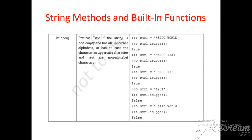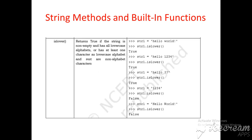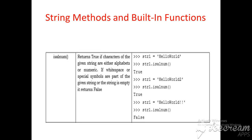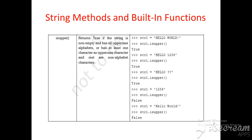str1 equal to '1234' — str1.isupper() returns false because it does not contain any uppercase character. str1 equal to 'HELLO world' with one special character also returns false because the rest of the characters are not uppercase alphabets. These are the main three string built-in functions in Python: isalnum(), islower(), and isupper().